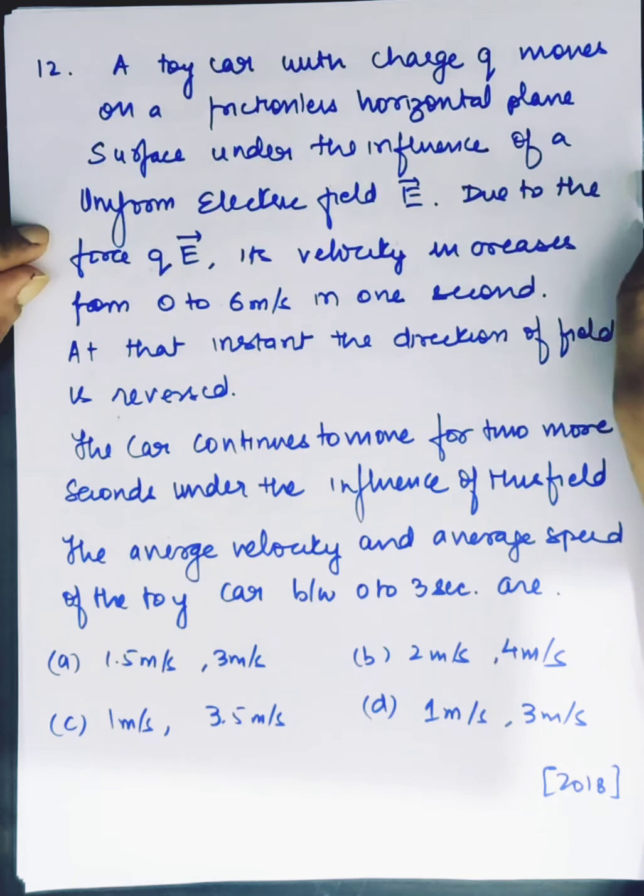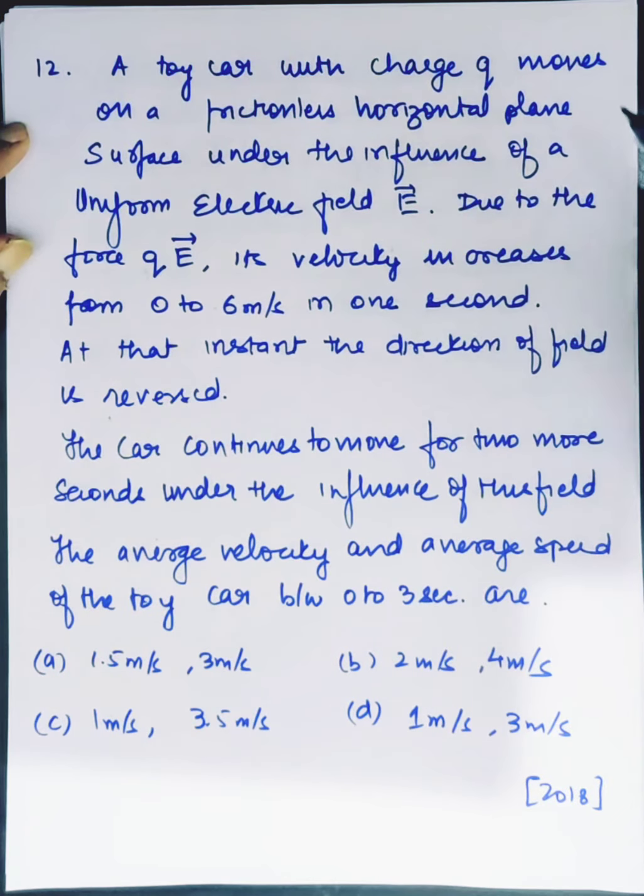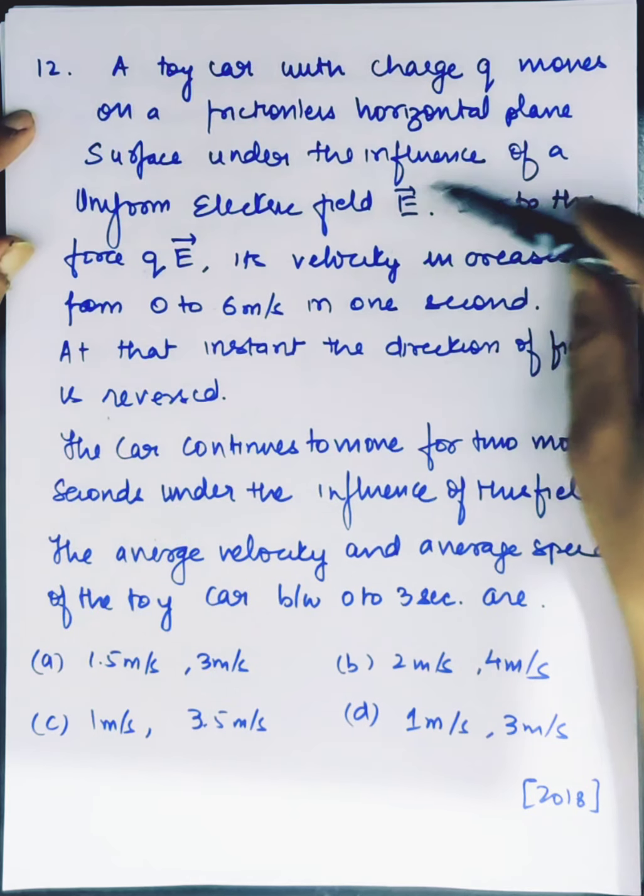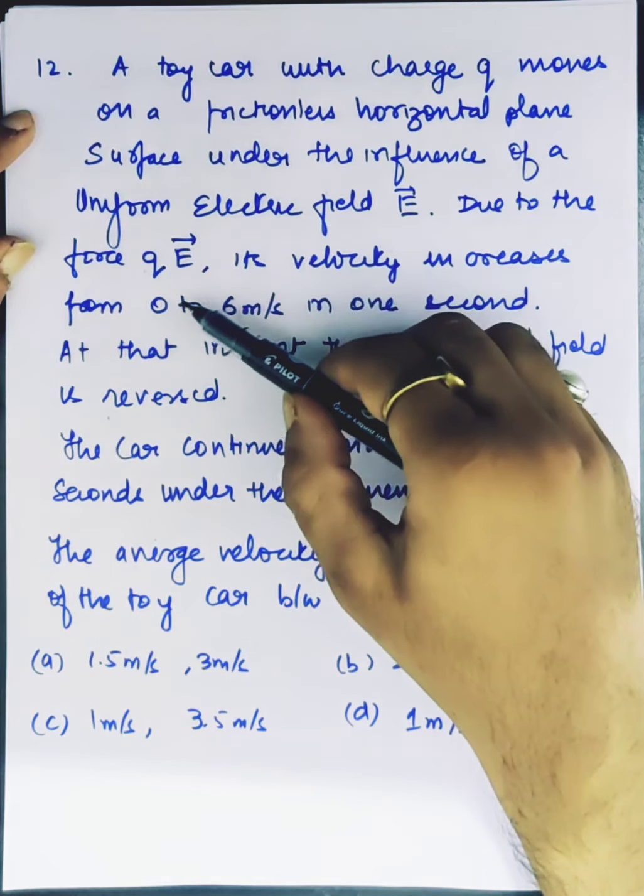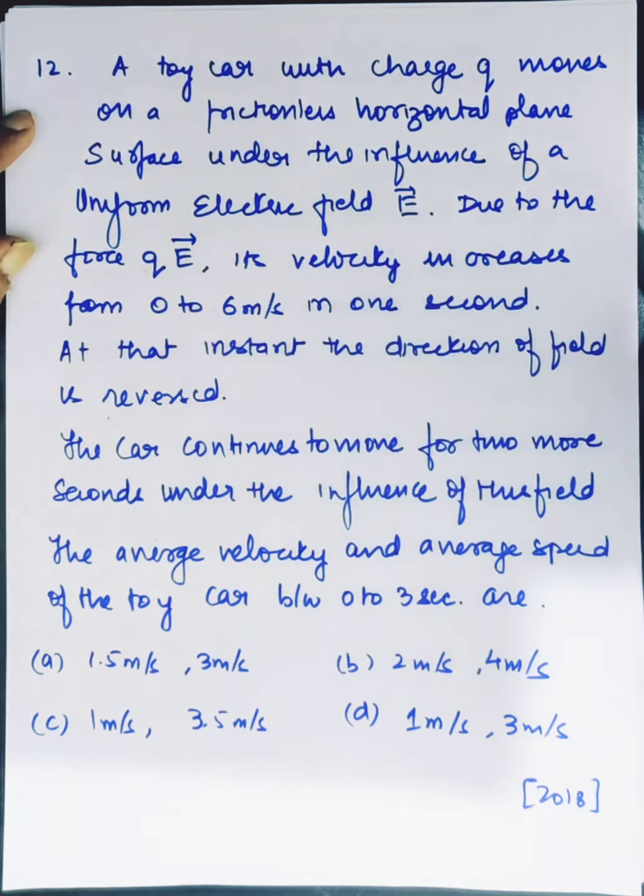A toy car with charge Q moves on a frictionless horizontal plane surface under the influence of a uniform electric field E. Due to the force QE, its velocity increases from 0 to 6 meters per second in just 1 second. At that instant, the direction of the field is reversed.